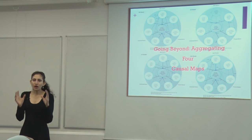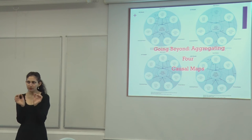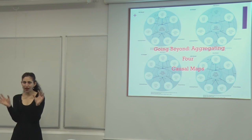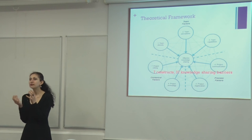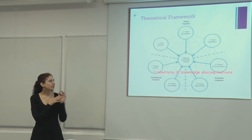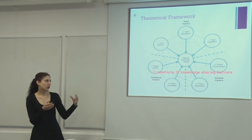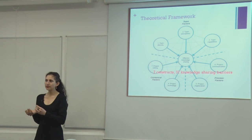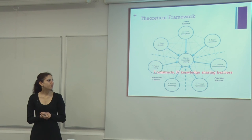Beyond addressing the research question about how barriers were perceived differently, the method allowed us to go further by aggregating all four maps — resulting in a new theoretical model theorizing on barriers to effective knowledge sharing. Our paper developed a conceptual model with seven constructs and 37 knowledge-sharing-specific barriers, which can be used in both qualitative and quantitative research by developing measurements based on each of these 37 barriers.